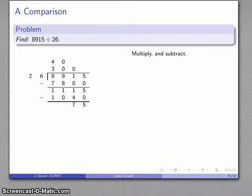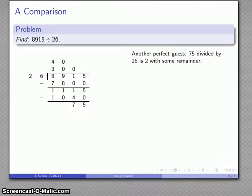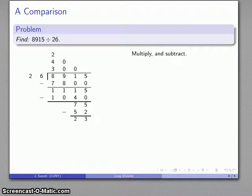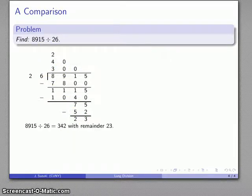And 2 times 26 is 52, and subtract, and I'm left with 23. 26 is larger than 23, so I'm now done with the problem. And my quotient is 342 with remainder 23. And so there's my division problem done using partial quotients.